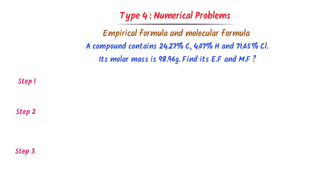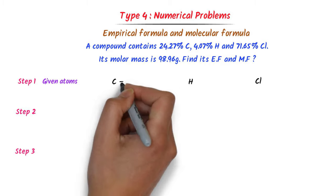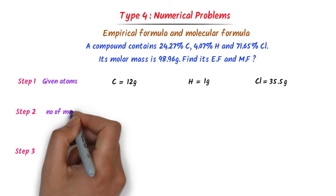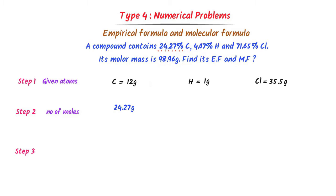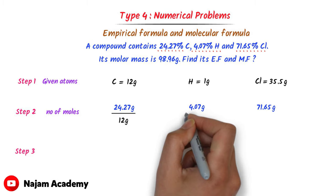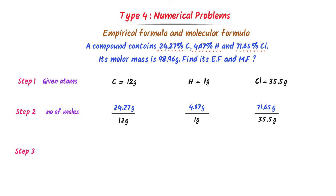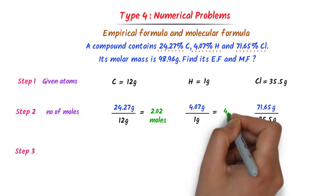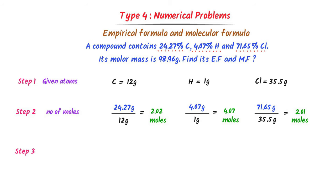To find the empirical formula, I follow the three steps. In the first step, I write the atoms — carbon, hydrogen, and chlorine — and their respective atomic masses: 12 grams, 1 gram, and 35.5 grams. In the second step, I find the number of moles: 24.27 grams divided by 12, 4.07 grams divided by 1, and 71.65 grams divided by 35.5. After calculation, I get 2.02 moles of carbon, 4.07 moles of hydrogen, and 2.01 moles of chlorine.